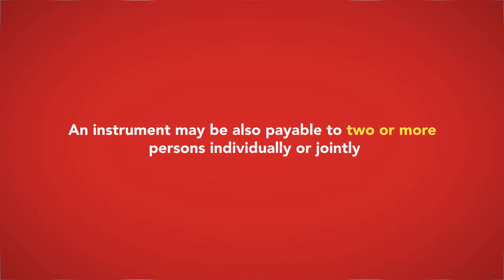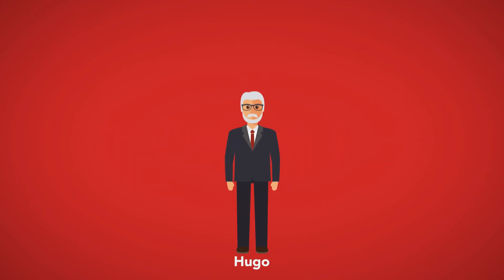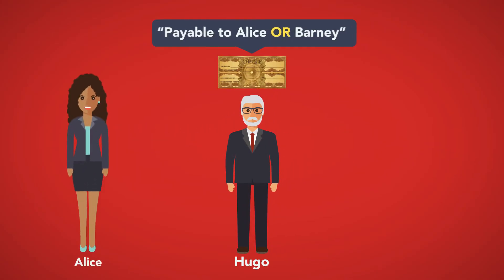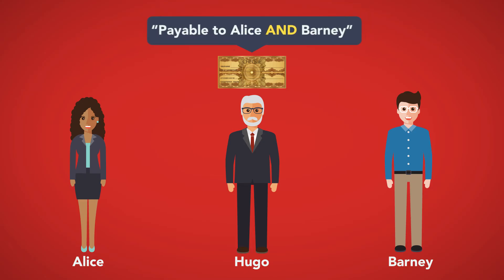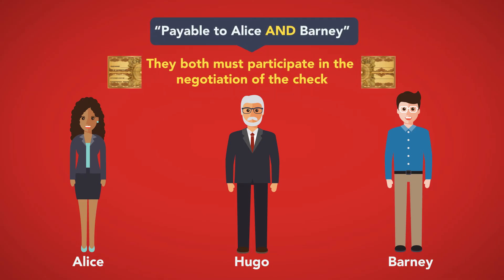An instrument may also be payable to two or more persons individually or jointly. For example, Hugo writes a check payable to Alice or Barney — either Alice or Barney may cash the check. However, if Hugo writes a check payable to Alice and Barney, then they both must participate in the negotiation of the check, which means they must both endorse the check for it to be cashed.